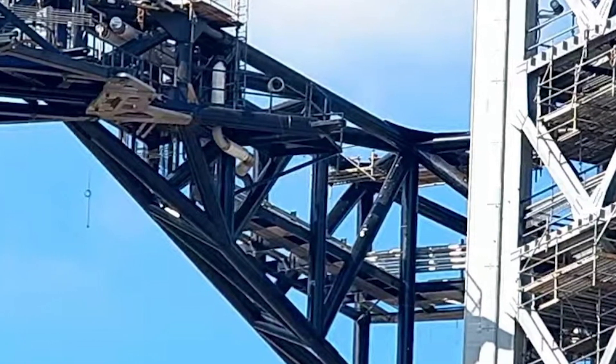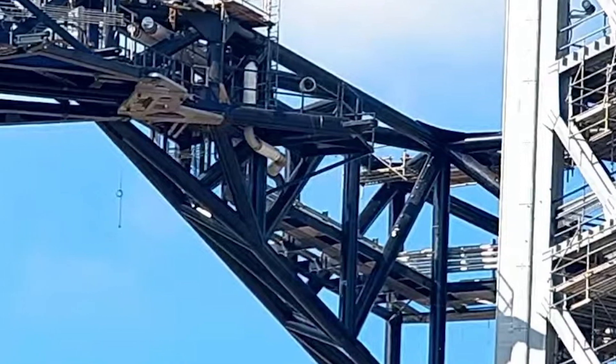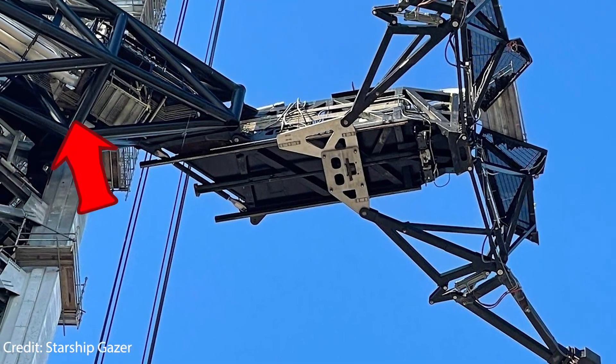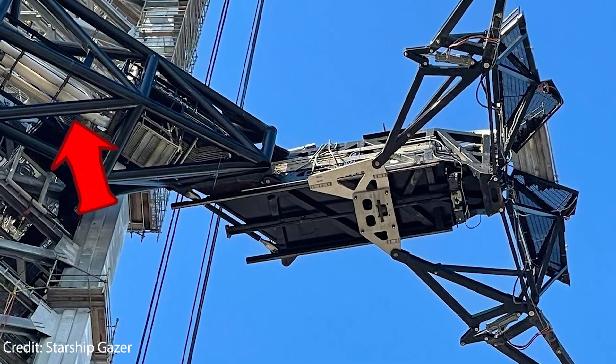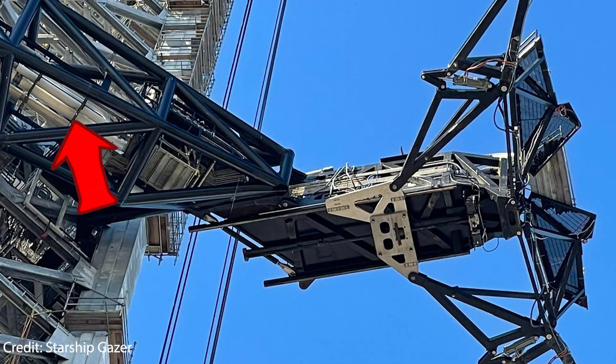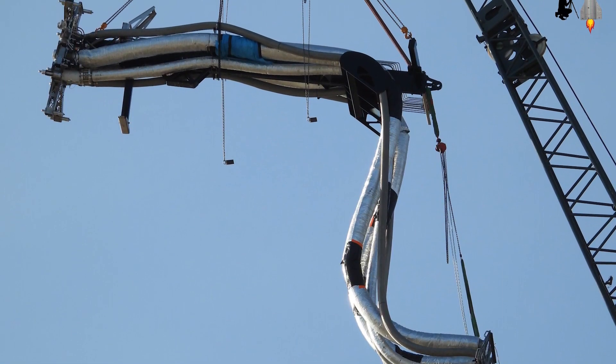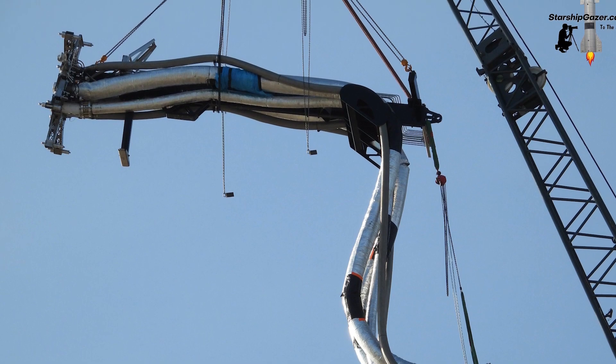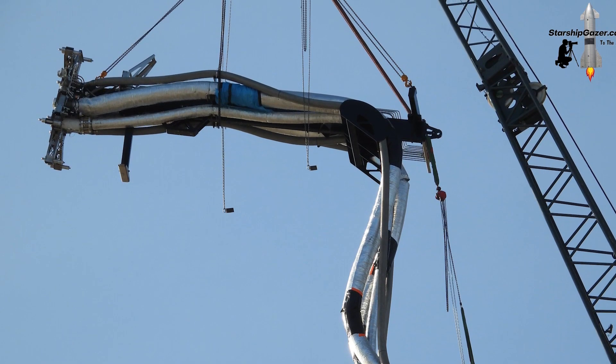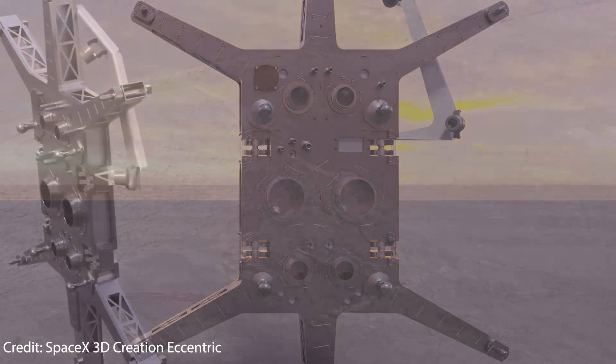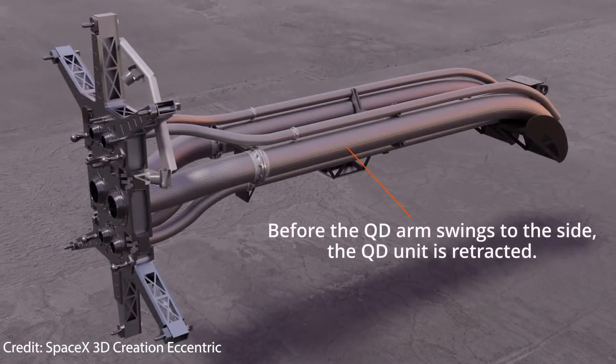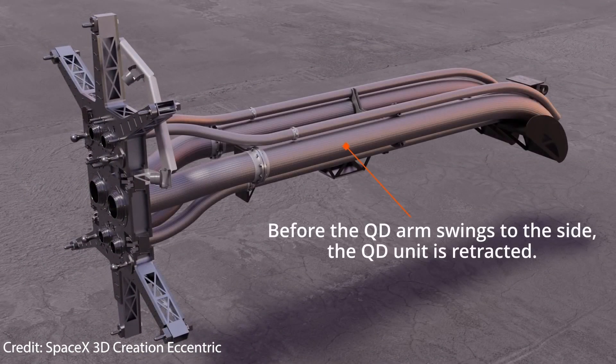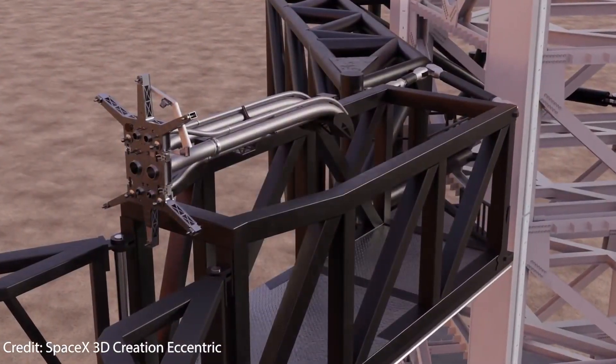In order to provide the Starship with propellant and other utilities, the QD arm will make use of a complex system of pipelines running from the ground up the tower to the quick disconnect arm. These pipelines are then attached to the alien looking ship quick disconnect, also fondly known as SQUID, an umbilical system that connects itself to the ship and provides all the necessary liquids, gases, electric power and signals to the spacecraft.